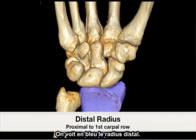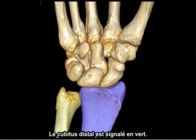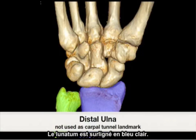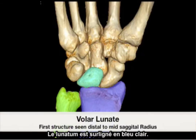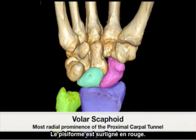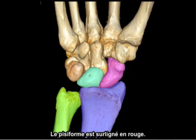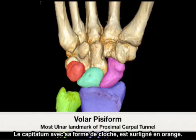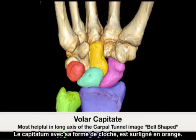Highlighted in blue is the distal radius. Highlighted in green would be the distal ulna. Highlighted in light blue would be the volar lunate. Highlighted in purple would be the volar scaphoid. Highlighted in red is the volar pisiform.